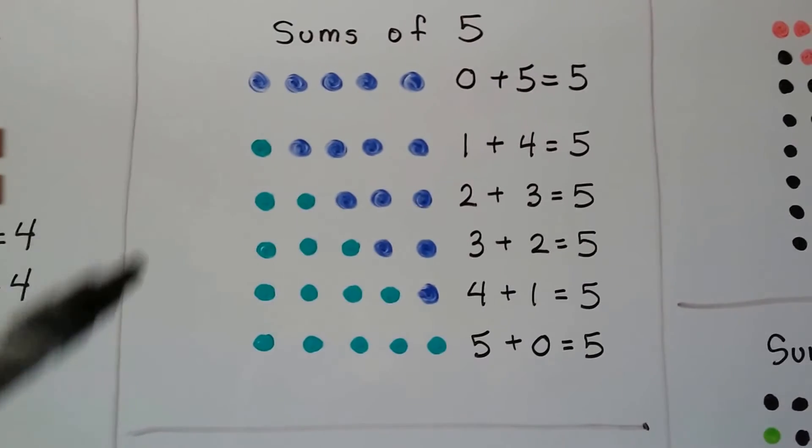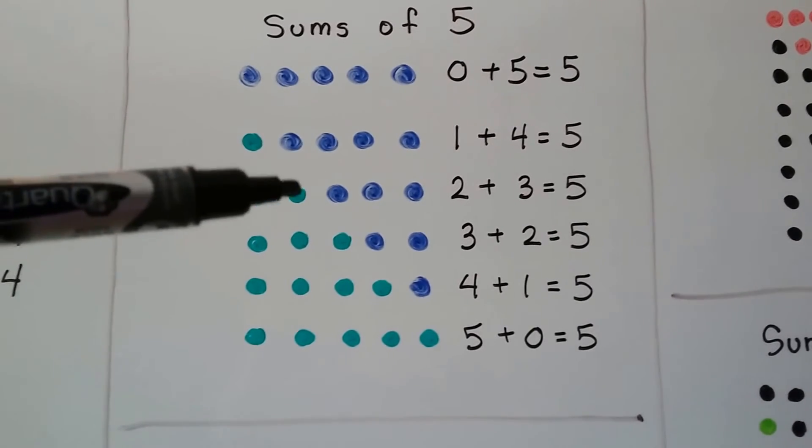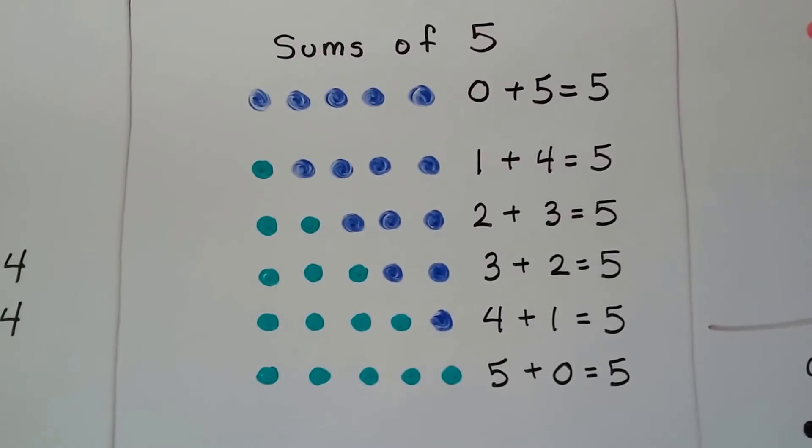And if we have five green ones and no blue ones, we have five. And you see the pattern coming down on an angle like that. As each green one increased, the blue ones went down, didn't they?